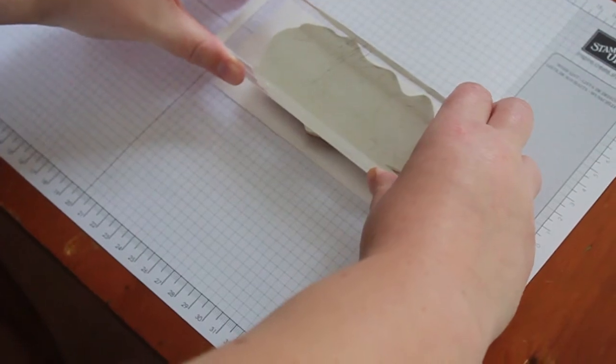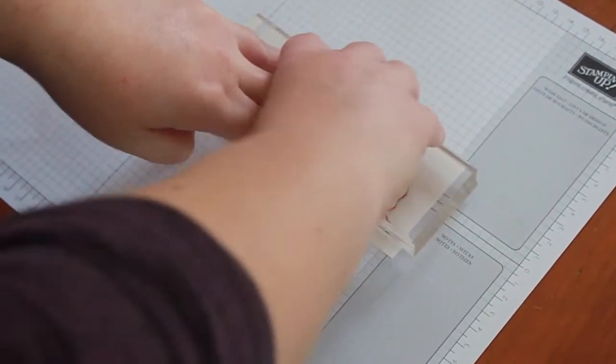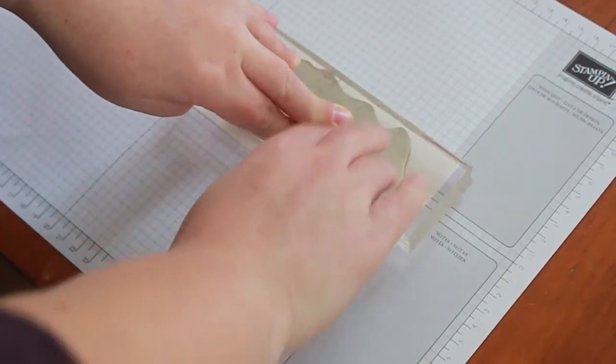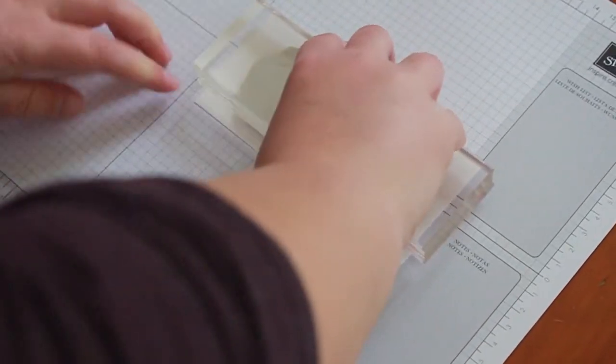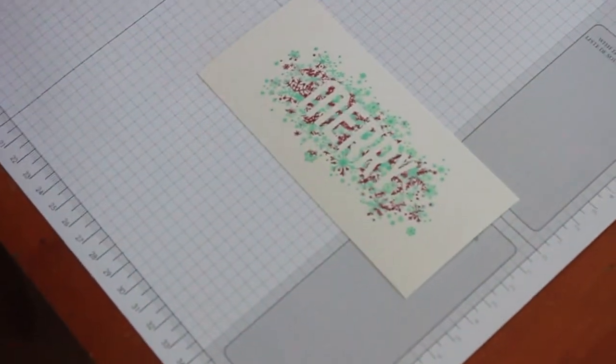Then you can go ahead and stamp. Because this is a large solid stamp, you want to give it some good pressure and walk your fingers around the stamp to make sure you're covering all the different pieces. And there you have your fun multicolored stamped image.